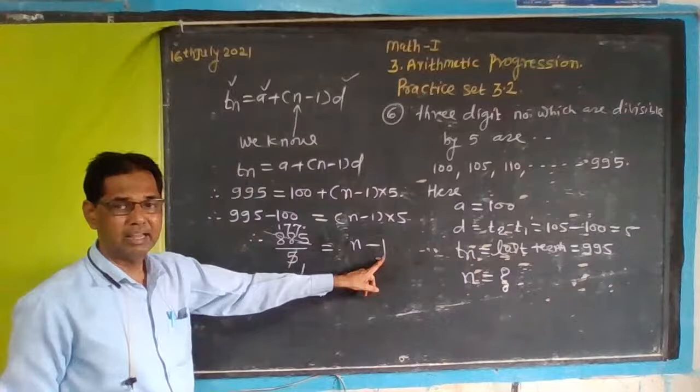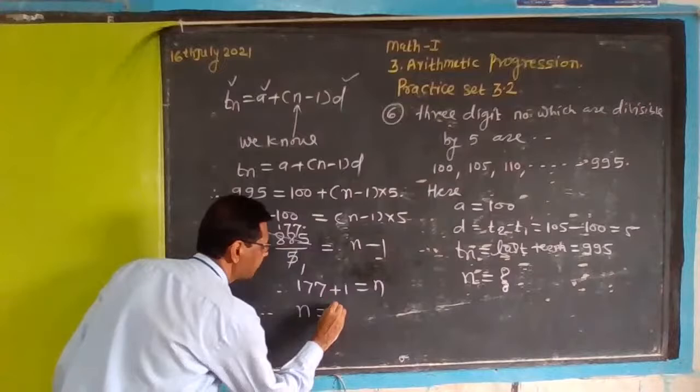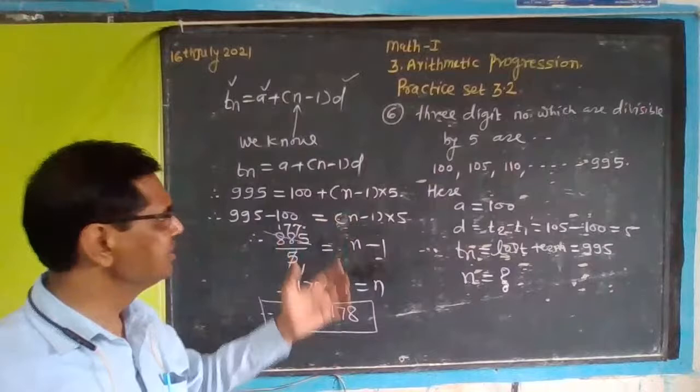So n equals 178. There are 178 three-digit numbers.